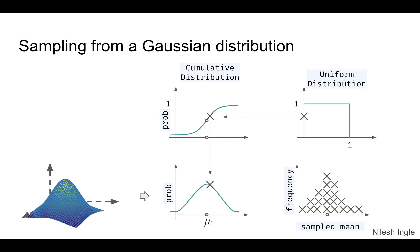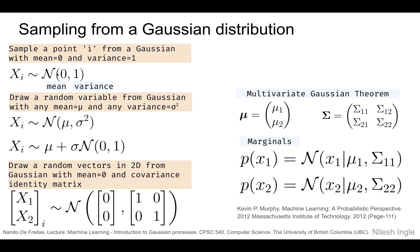Mathematically, sampling a data point xi from a normal Gaussian with mean zero and variance one is written as xi ~ N(0, 1). If the mean is not zero, we write it as xi ~ N(μ, σ²), which can be rewritten as μ + σ · N(0, 1). This is a very important equation that we'll use later on.